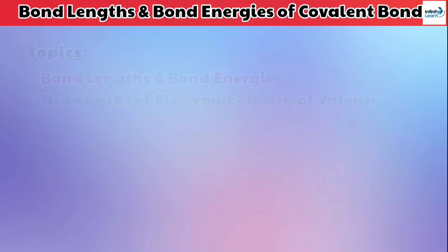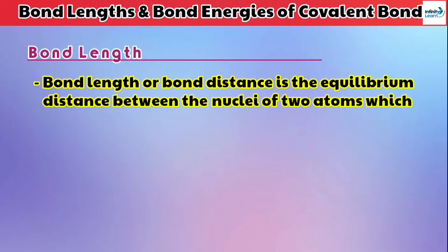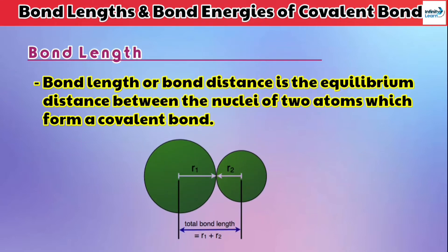So now firstly, let's see what is bond length. Bond length or bond distance is the equilibrium distance between the nuclei of two atoms which form a covalent bond. Simply, when two atoms combine to form a covalent bond, the distance between the nuclei of both elements is called the bond length of that covalent bond.